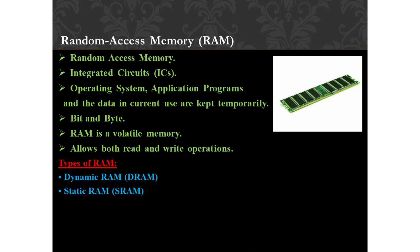There are two basic types of RAM: Dynamic RAM (DRAM) and Static RAM (SRAM). These two types differ in the technology they use to hold data. Dynamic RAM is the common type and needs to be refreshed frequently. Static RAM needs to be refreshed less often, which makes it faster — hence SRAM is more expensive than DRAM.